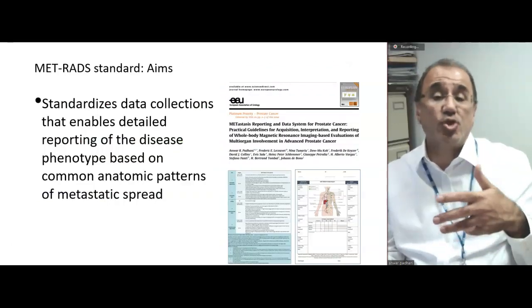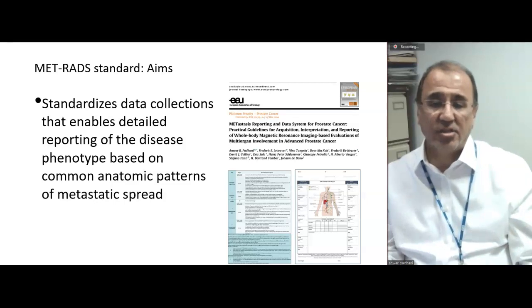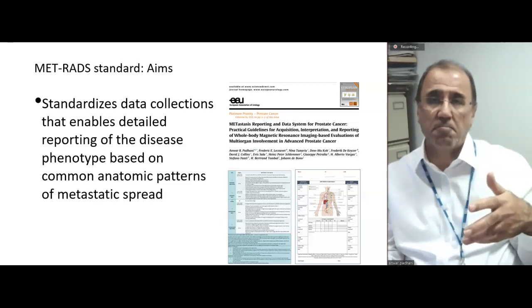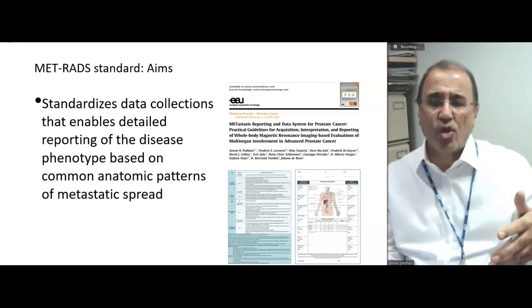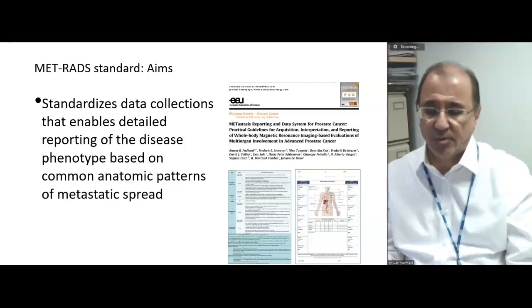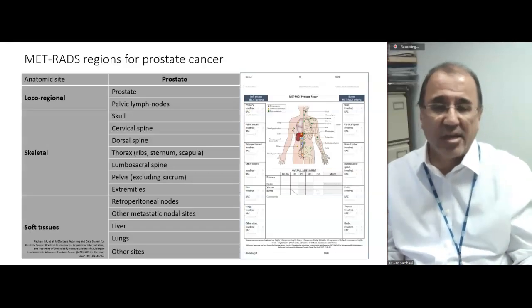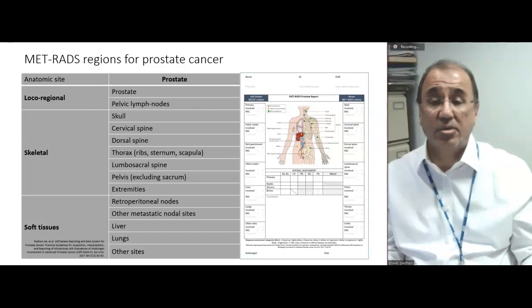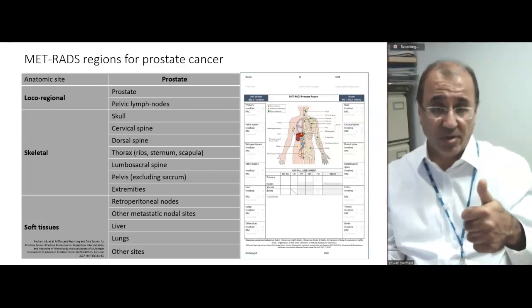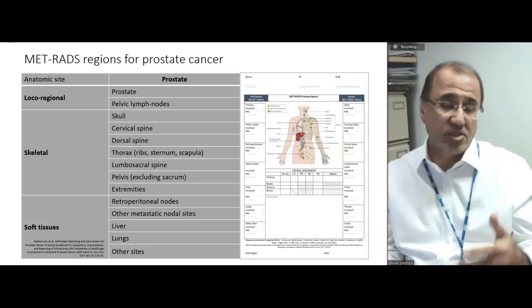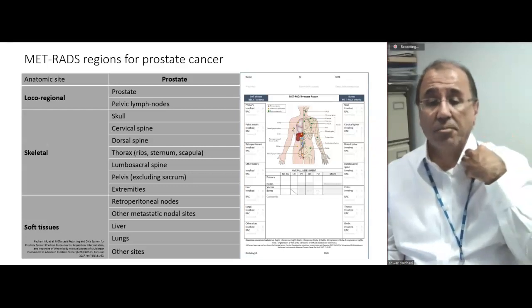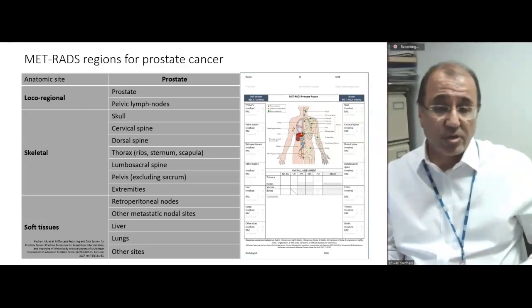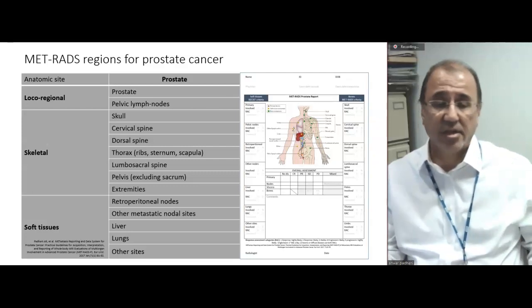We clearly want to standardize our collections to report on what's happening in the body based on common anatomical patterns of disease. For prostate cancer, we report local-regional disease (prostate and pelvic lymph nodes), skeletal sites, and soft tissue disease including metastatic lymph nodes elsewhere, retroperitoneal lymph nodes, liver, lung, and other sites.